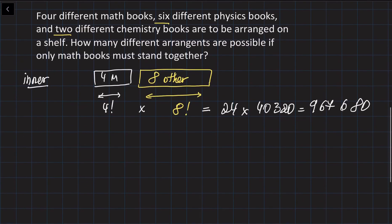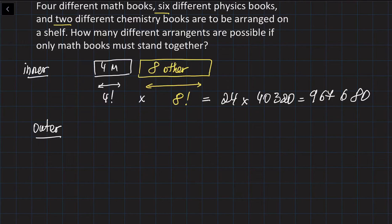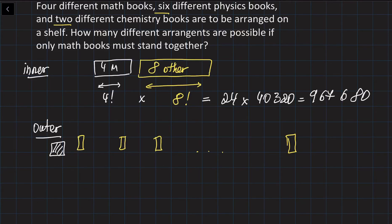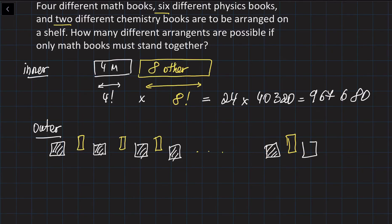Now we need to look at this from the outer perspective. You have eight books in a row, and you can put the block of math books at the beginning, or after the first book, after the second book, after the third book, and so on — all the way to the end. Since you have eight books, the number of positions to place the block of math books is equal to nine — nine different positions.